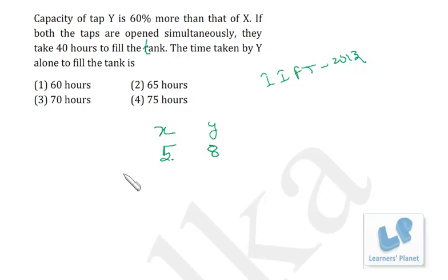So timing ratio will be reversed, right? Y is more efficient than X, so timing ratio will be 8 is to 5. If Y takes 5 hours, X will take 8 hours to do the same work.